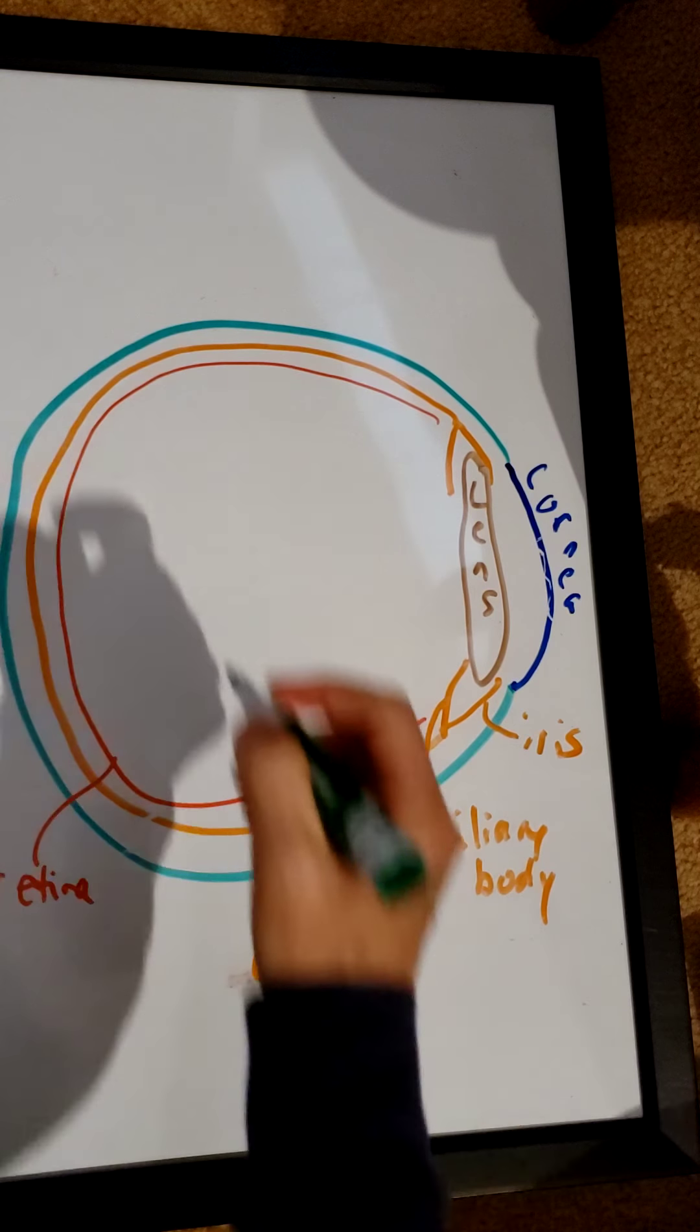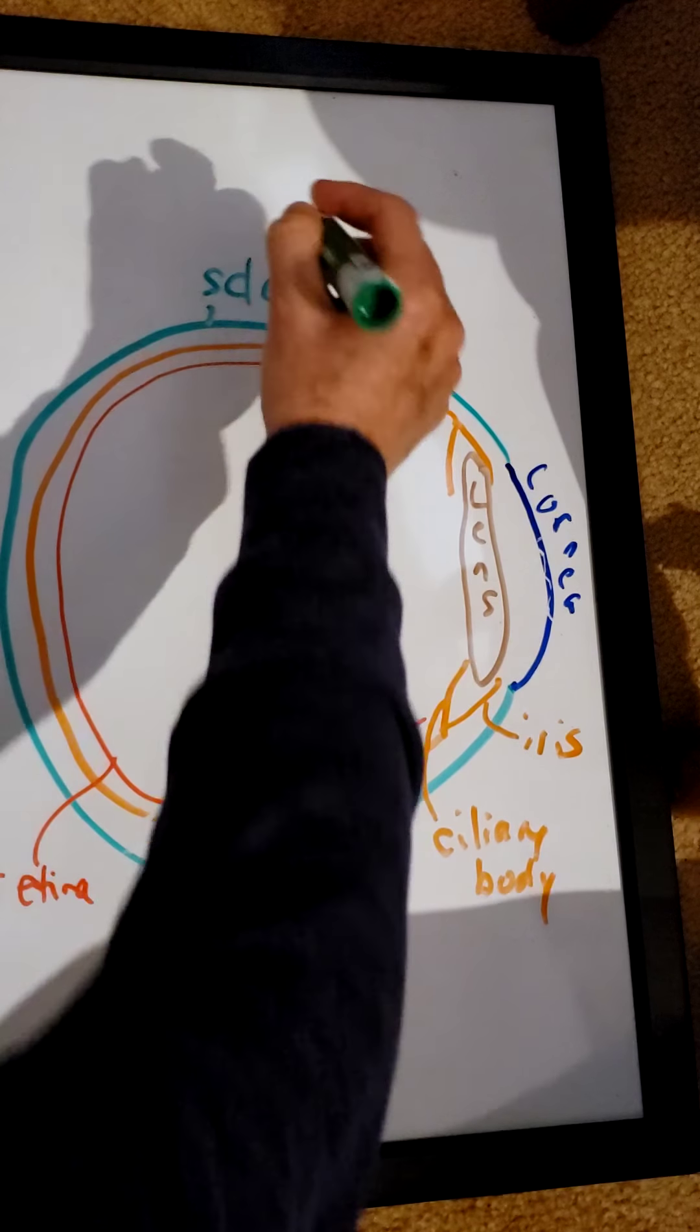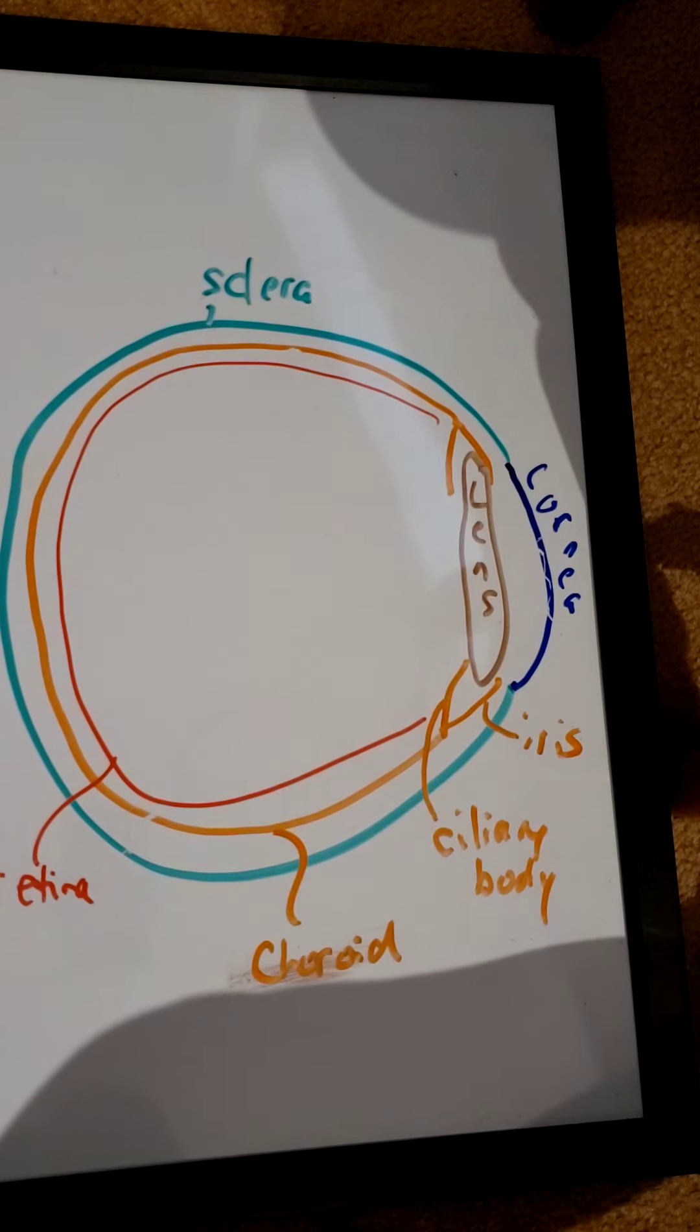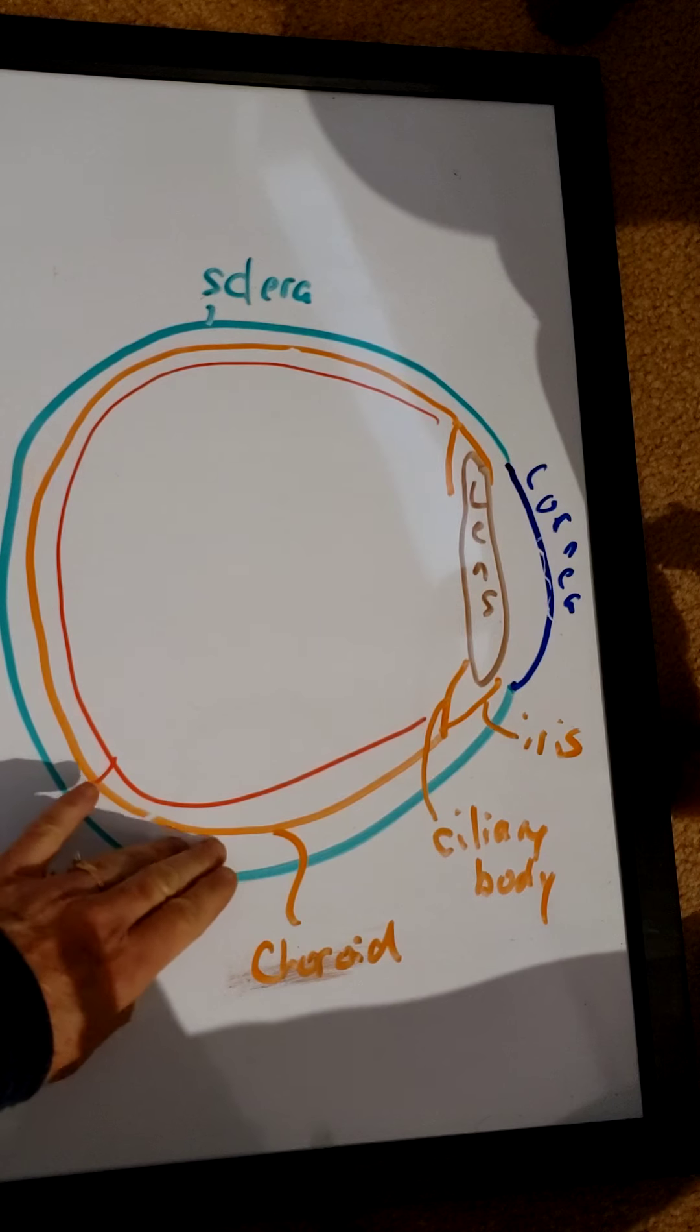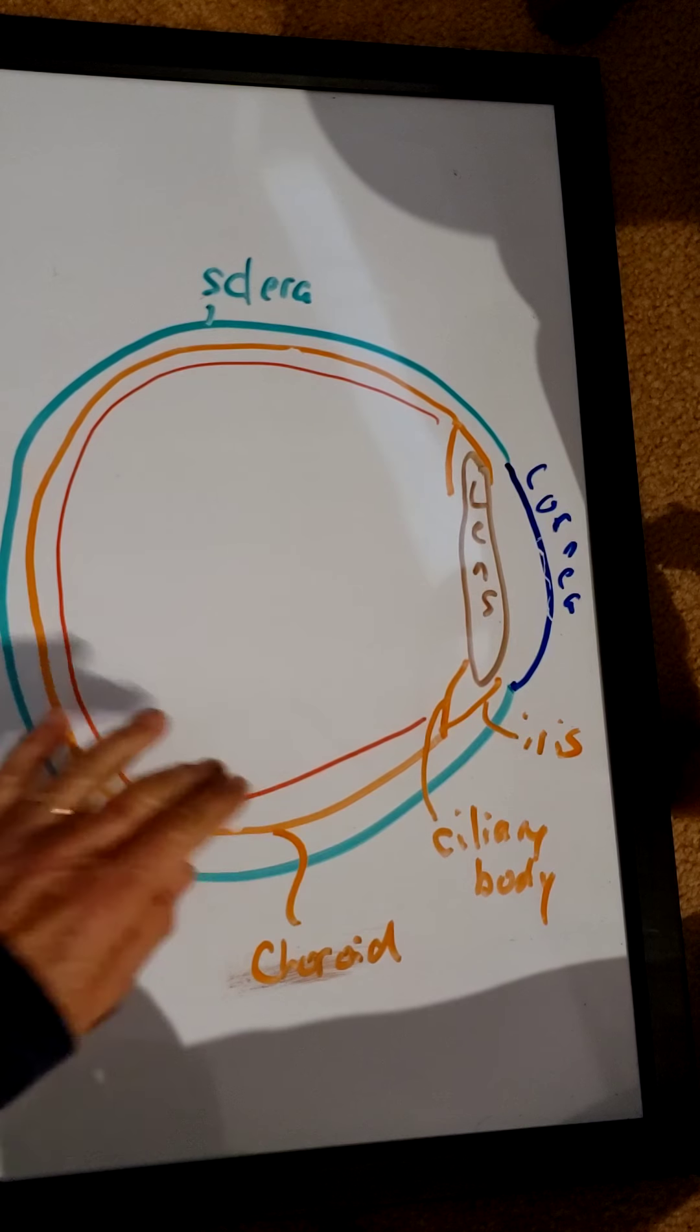So the outermost part is the sclera, and then the choroid with the vascular layer, and then the retina with the receptors for light on it.